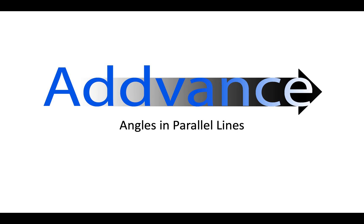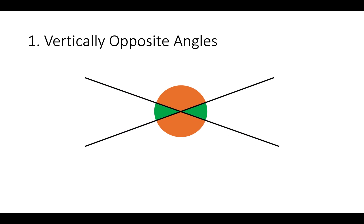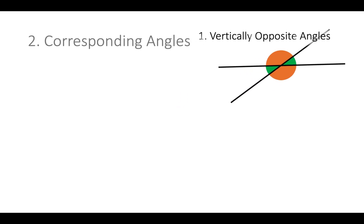There's three rules I want you to remember for angles in parallel lines. The first one is just for when two lines are crossing, the angles opposite are the same. So vertically opposite angles are the same. These two green angles here are exactly the same and these two orange angles are the same as well. And it doesn't matter what angle we're at, they'll always be the same.